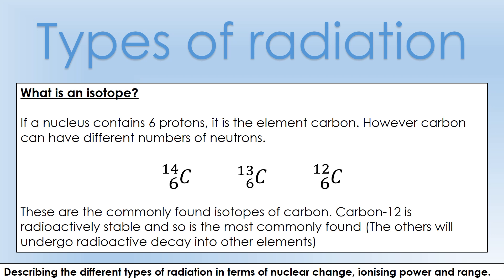Carbon comes in different isotopes - all carbon because they all have six protons, but with different numbers of neutrons: eight, seven, and six respectively. The most stable is carbon-12, where 12 refers to the nucleon number. Almost all carbon in the atmosphere and in coal is carbon-12, but there is also some carbon-13 and carbon-14.